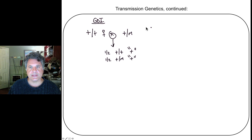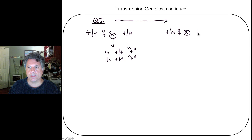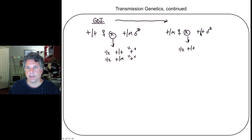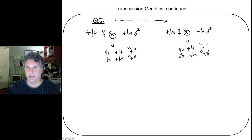Now let's do the reciprocal cross with the same gene of interest. We cross a heterozygous female — carrying the same mutation — to a homozygous wild type male. We end up with the same two genotypes: one half of offspring will be homozygous wild type, having inherited the wild type allele from both parents; and one half will be wild type over mutant, having inherited the mutant allele from their mother and the wild type allele from the father. Here the homozygous wild type has a wild type phenotype, but the heterozygote shows a mutant phenotype. That is very strange — the exact same genotype produces a different phenotype depending on the direction of the cross.